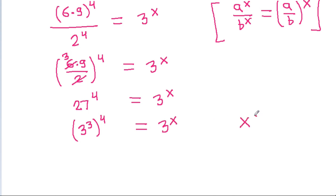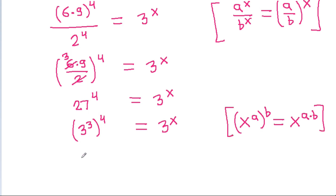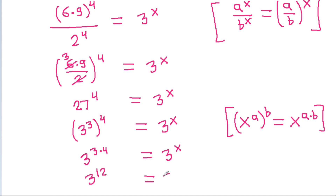Using the rule that (x power a) power b is equal to x power (a times b), so (3 power 3) power 4 becomes 3 power (3 times 4), that is equal to 3 power x. And 3 times 4 is 12, so 3 power 12 is equal to 3 power x.